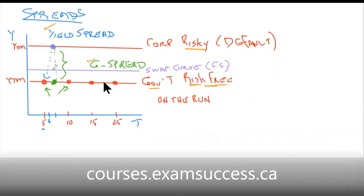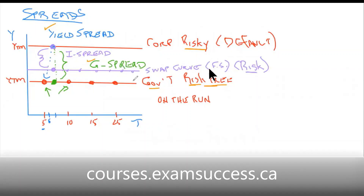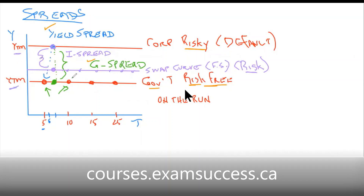You've got to have that skill to put it together and think about the I-spread. And can you use that swap curve? You're not going back to what you did at level two with the fixed rate on a swap and calculating those, but that's where the qualitative part starts to come in. A visualization like this is really going to help you pull it all together.